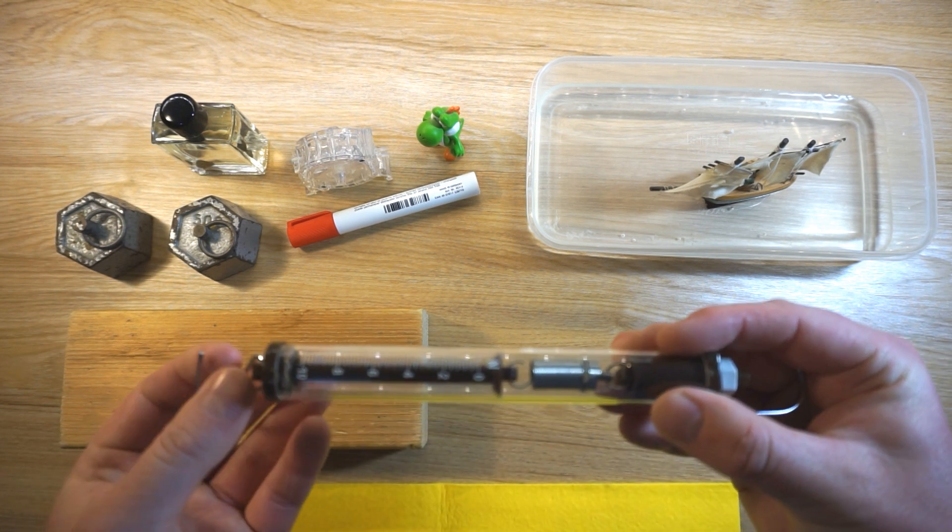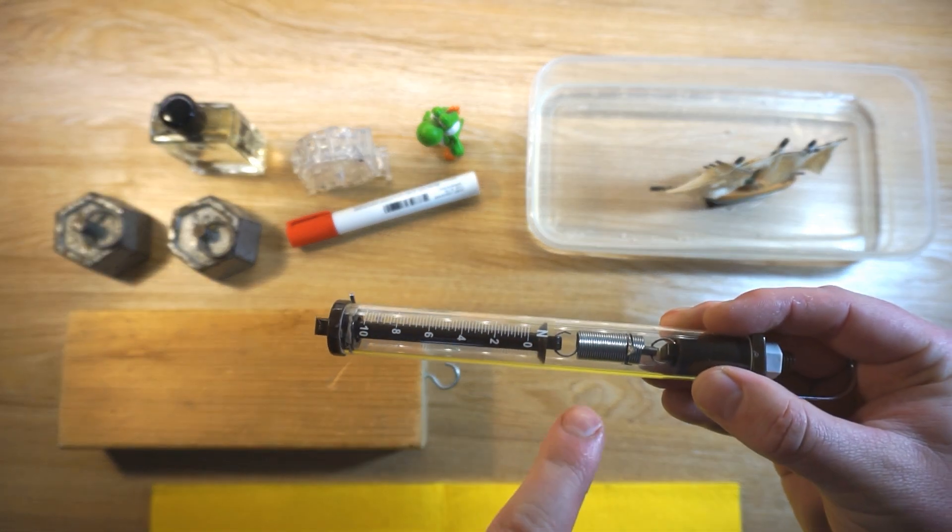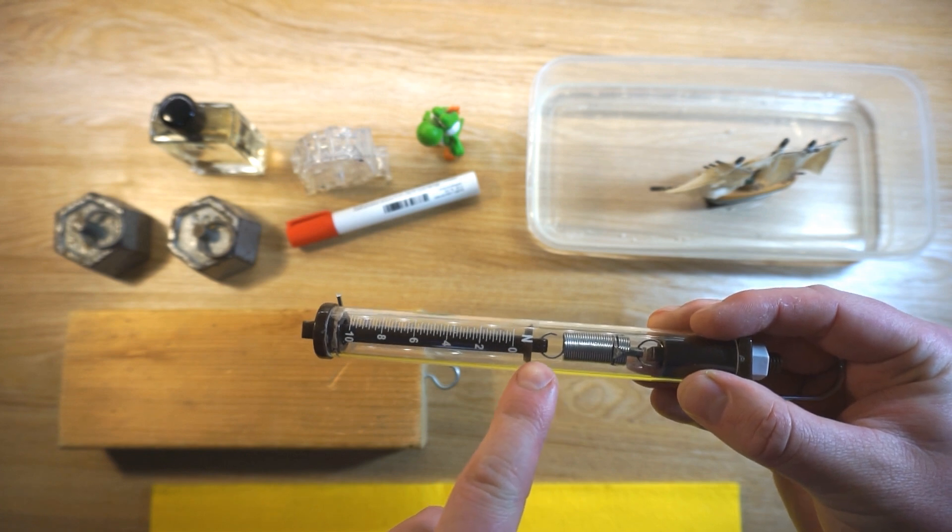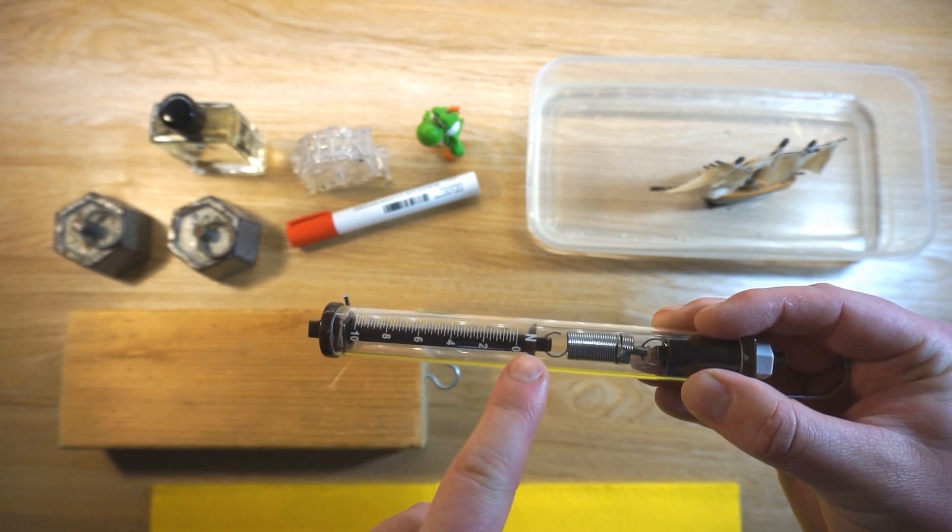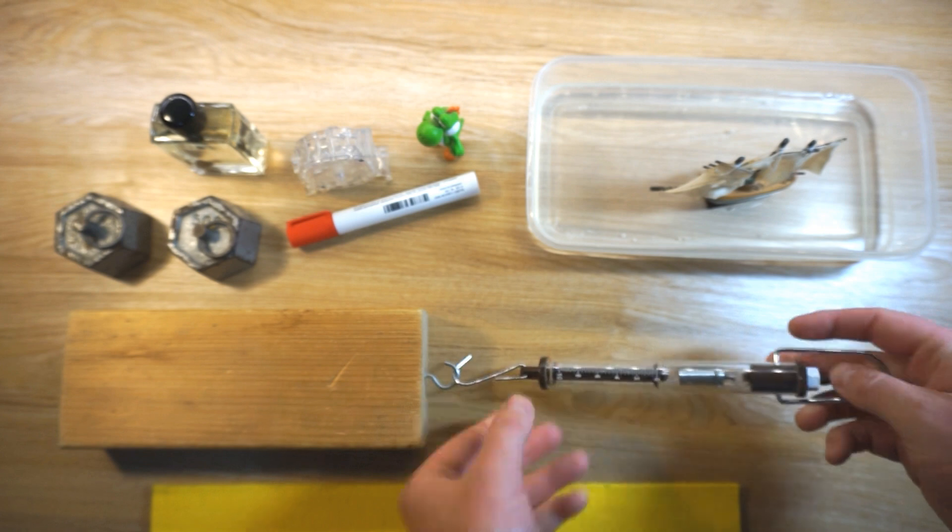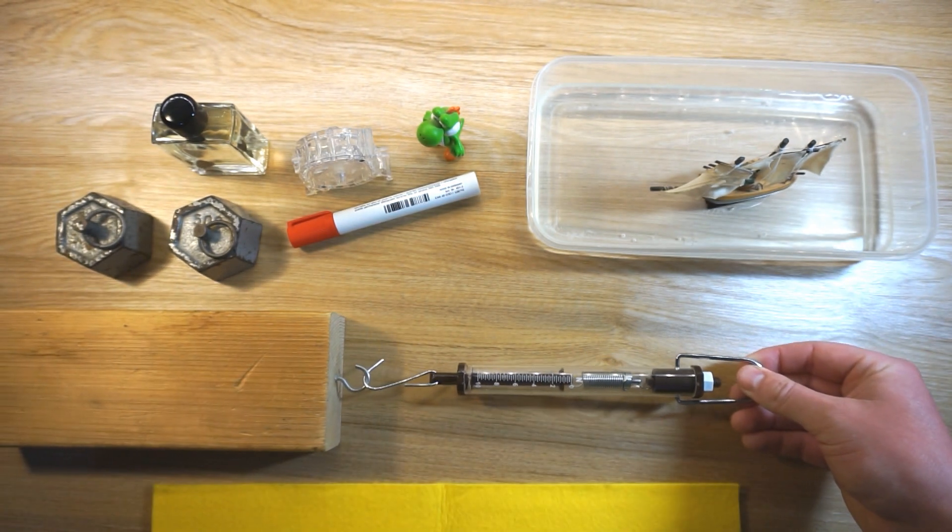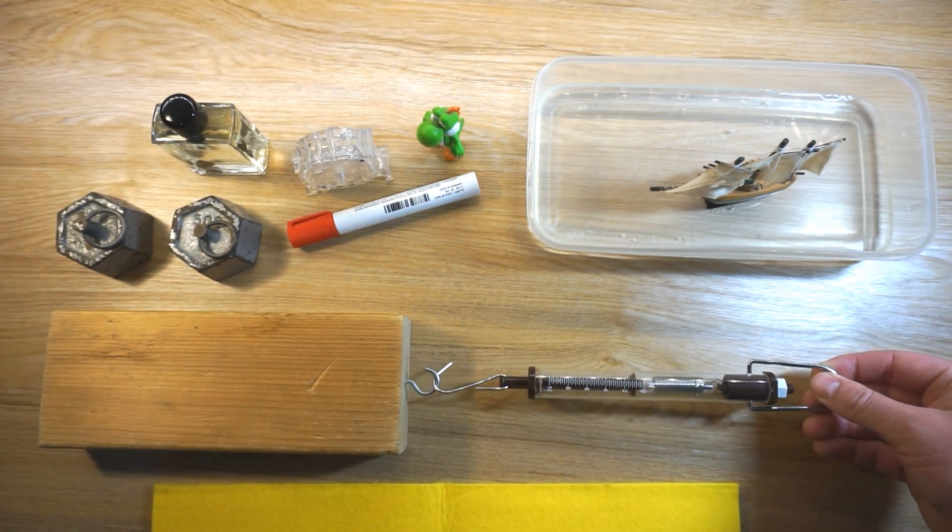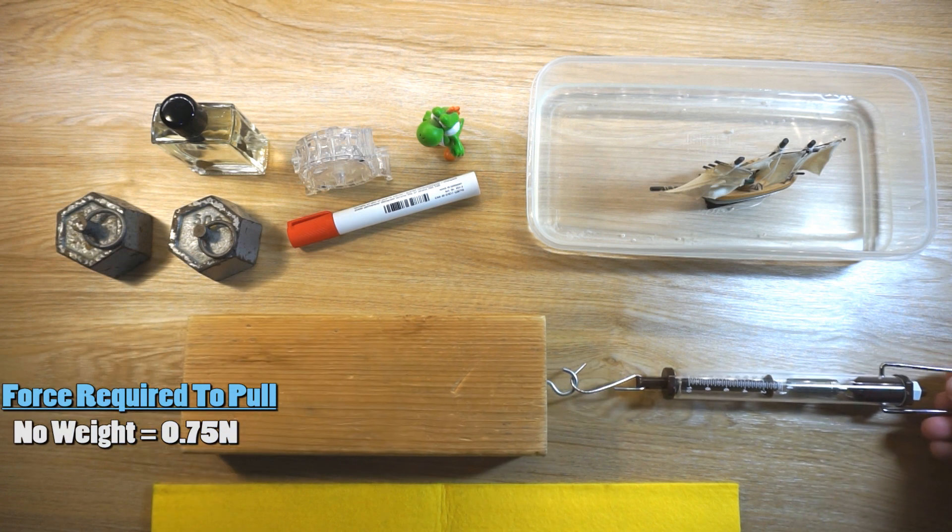I'm going to connect this spring balance to the block of wood and then pull it along and measure how much force is required to pull the block in a unit called newtons. As I'm pulling the block, I can see that it takes about 0.75 newtons of force to pull this block.